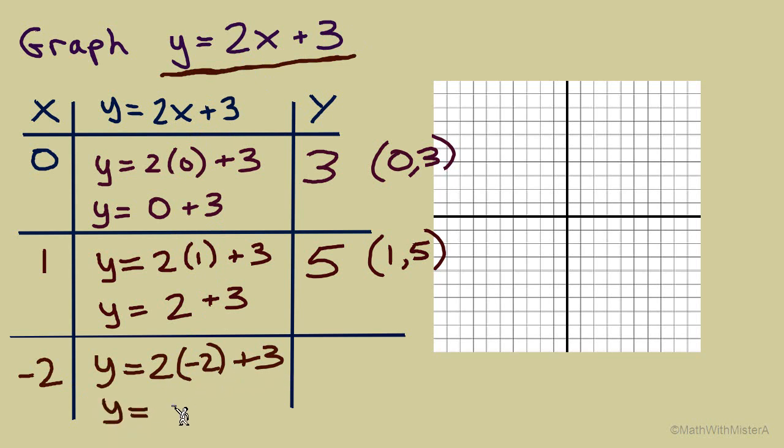We'll simplify. 2 times negative 2 is negative 4. And then still add 3. That will give us y equals negative 1. So there's our third ordered pair solution, (-2, -1).